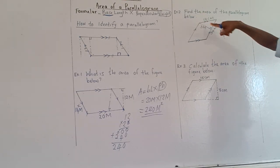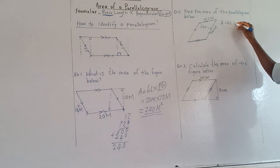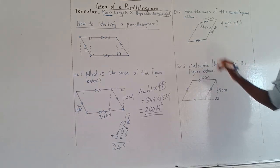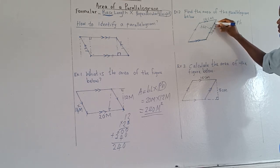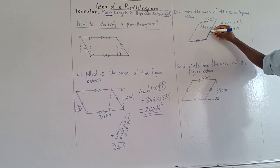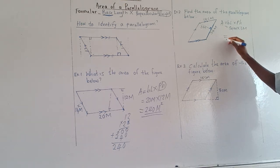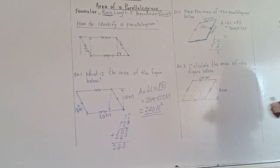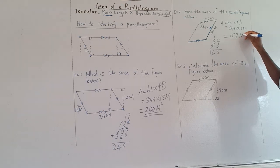Example 2: Find the area of the parallelogram below. Area of a parallelogram is base length times perpendicular height. If you use the slanted side as your base you cannot find the height, so this bottom side becomes our base — that is 54 meters. The perpendicular height is 3 meters. So you have 54 times 3: 3 times 4 is 12, carry 1; 3 times 5 is 15 plus 1 is 16. So the area becomes 162 meters square.